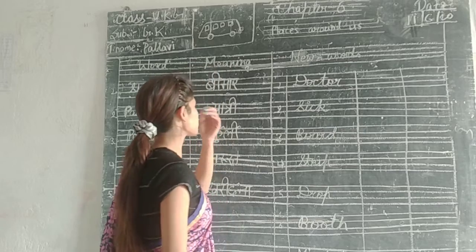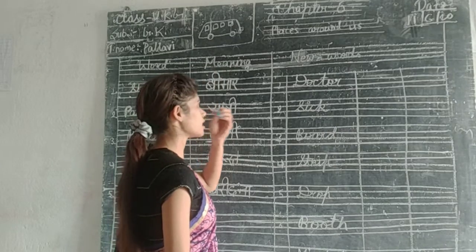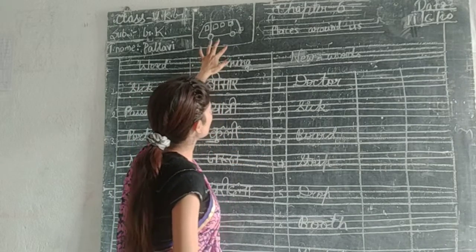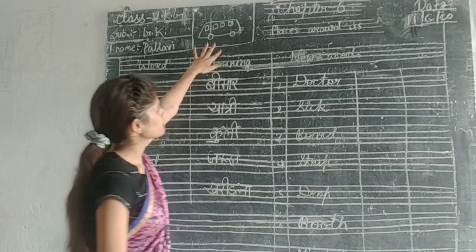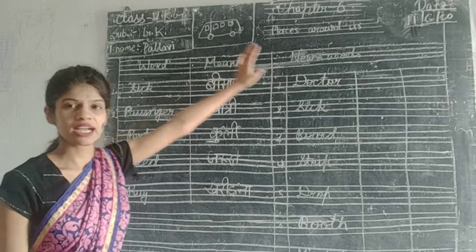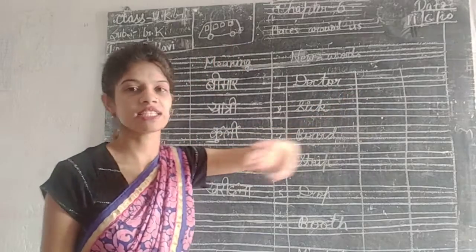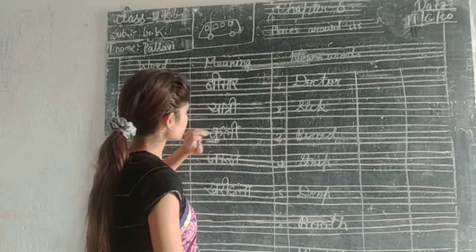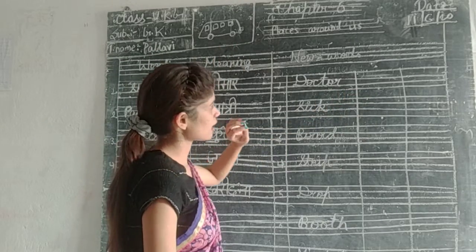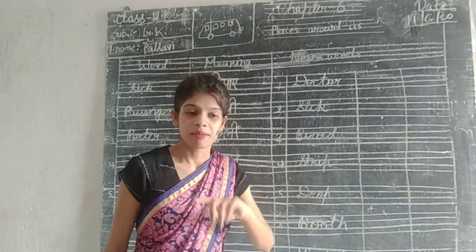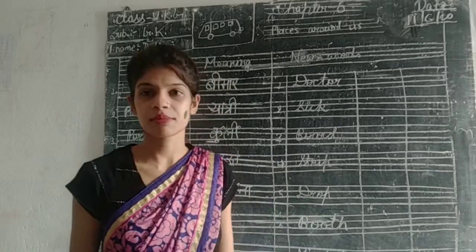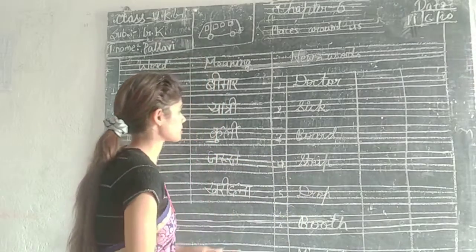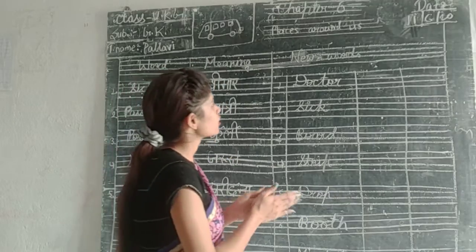Then we will start a new work system. You will make a small picture of the car, because there is a place around us. If you can make a small picture of the market, you will make a small picture of the market.